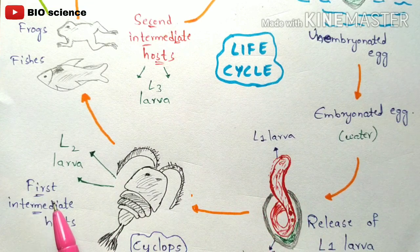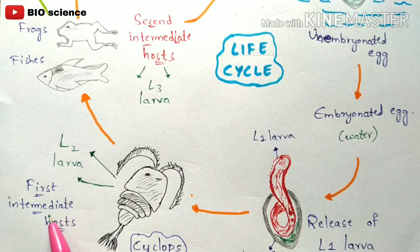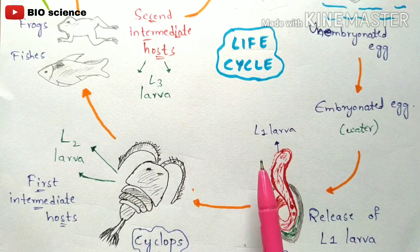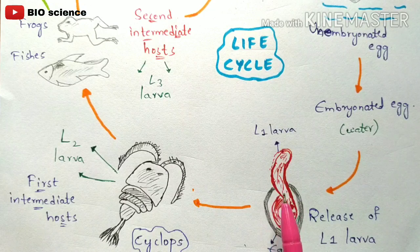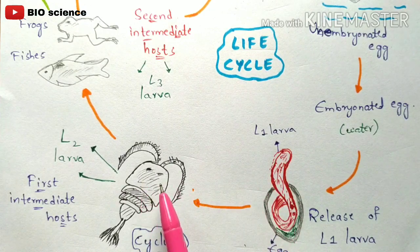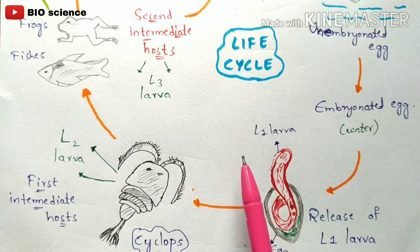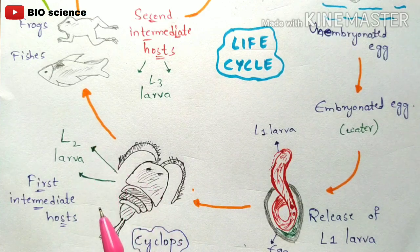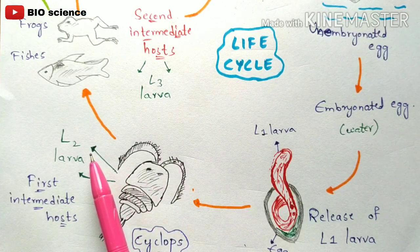Now the first intermediate host starts its function. The best example of the first intermediate host is Cyclops. The Cyclops begins feeding on the L1 larvae, which are free in the water after hatching. The L1 larvae enter the gut of the Cyclops and develop into L2 larvae, also called second stage larvae.